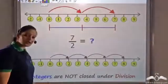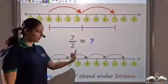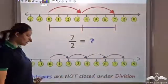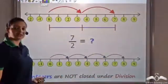If I take two integers and divide them, the result is not always an integer. Hence, integers are not closed under division.